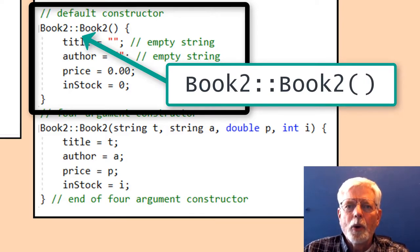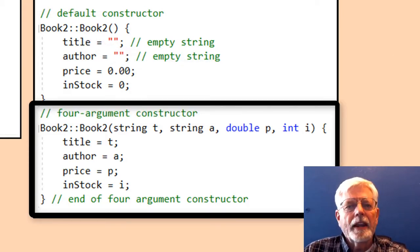The four argument constructor is done in a similar manner. It is coded as Book2 colon colon Book2 open parenthesis.